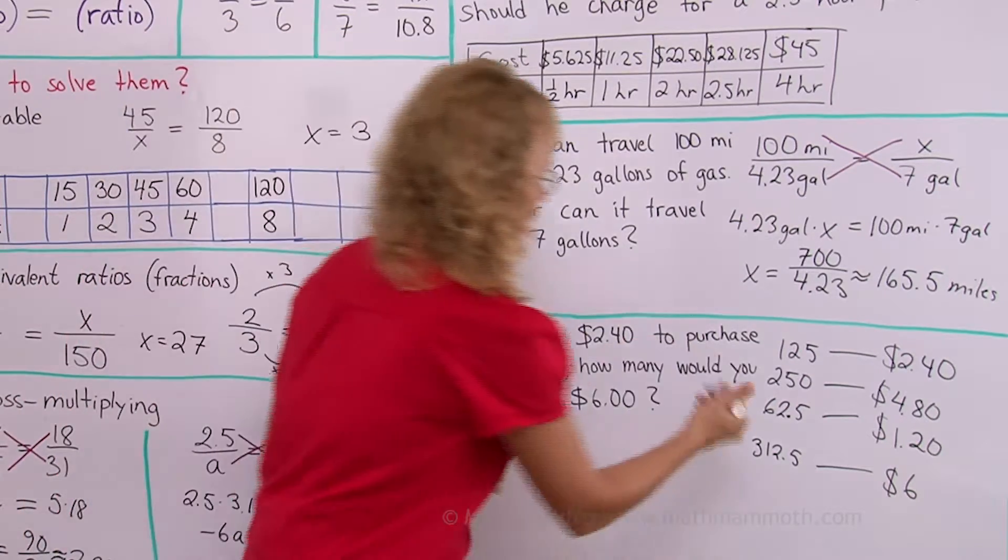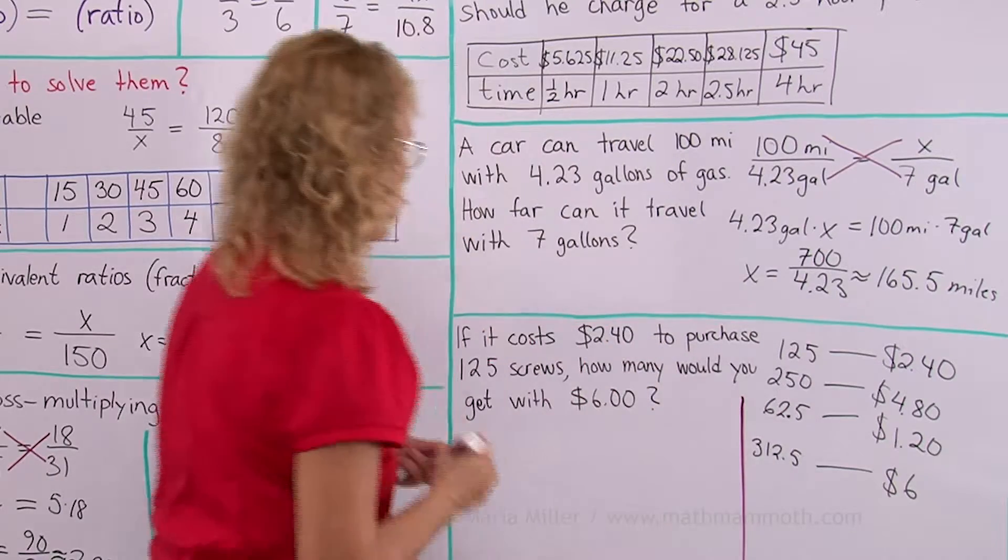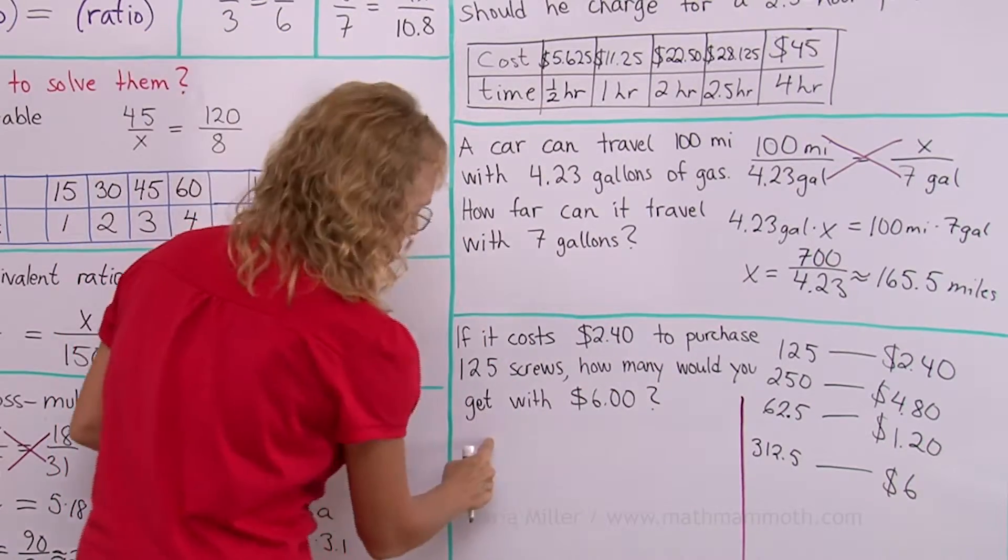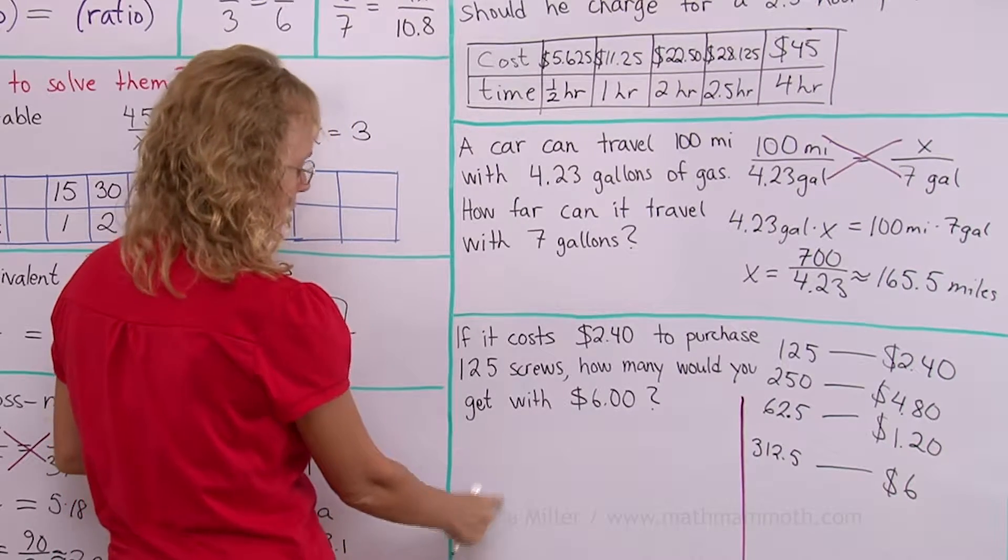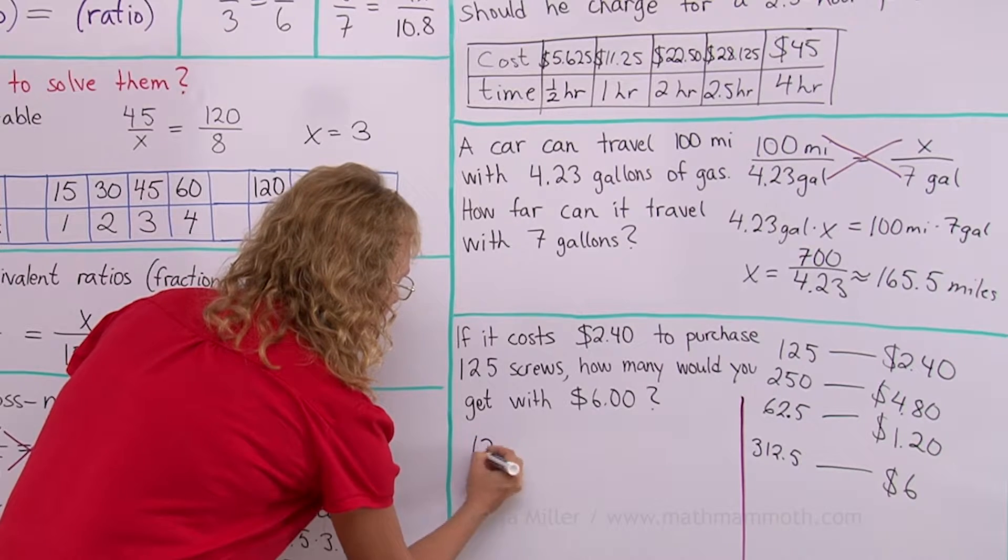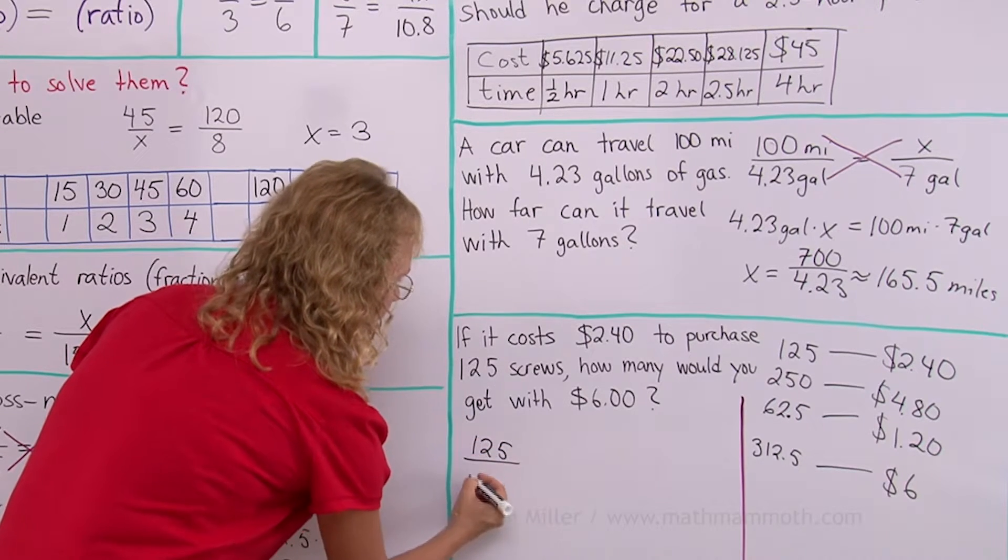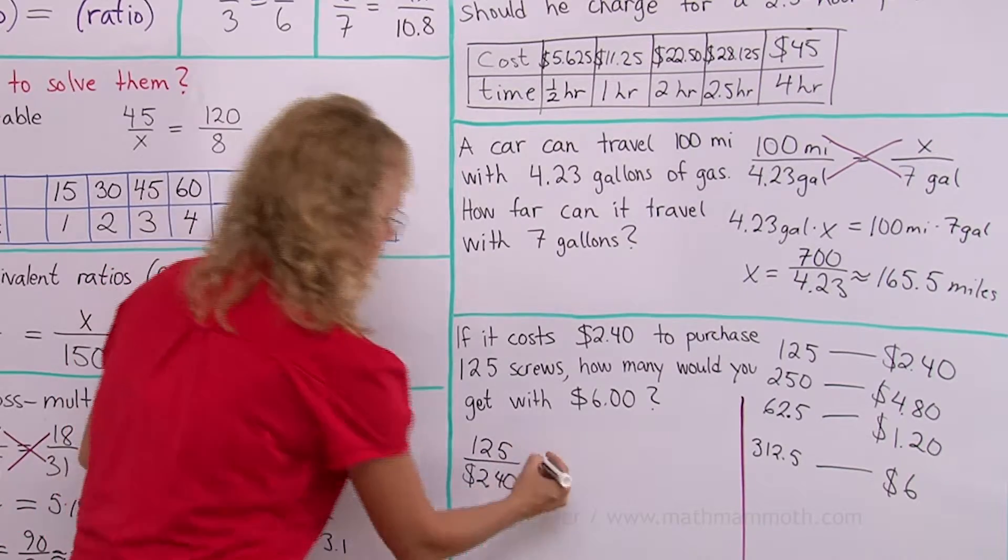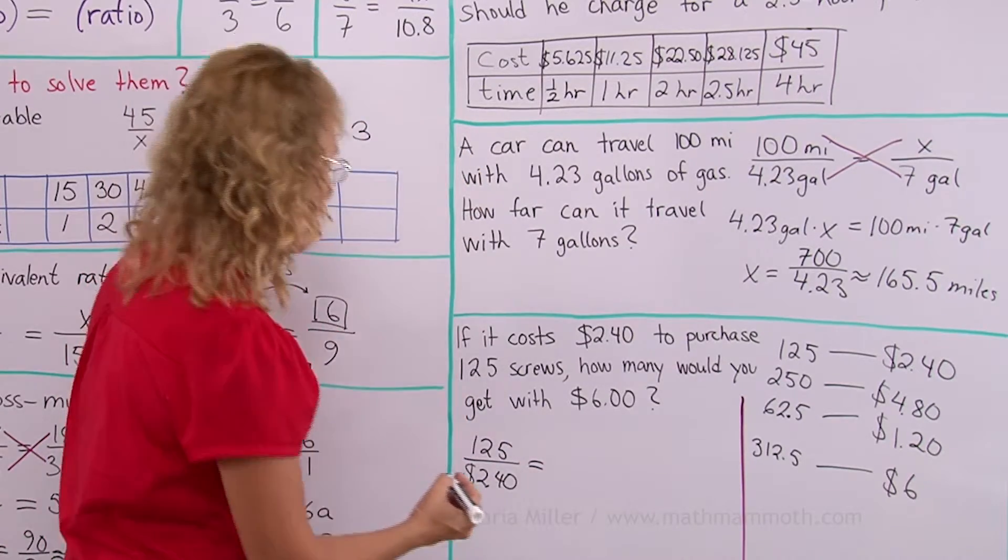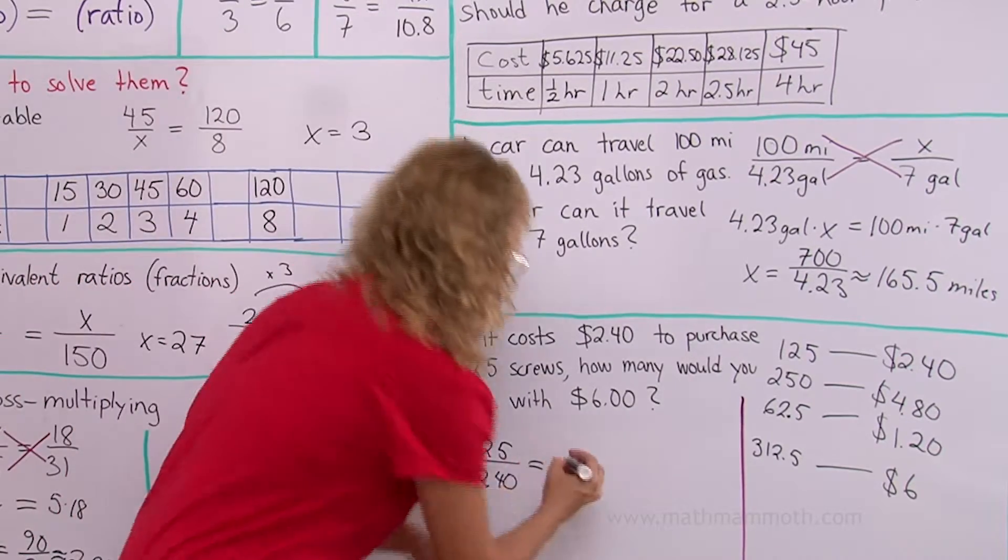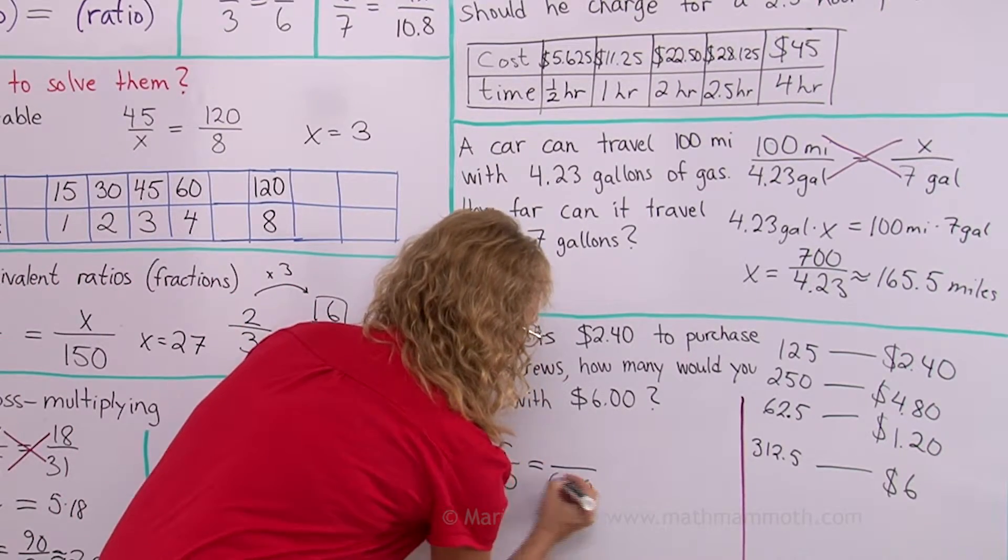And now also I'm gonna write a proportion. If I write a proportion I can put either screws per dollars or dollars per screws. Either way it'll work. Of course it's normal to put screws per dollars right? It's more usual. But it won't matter which way you do it. And then over here you just have to put since the money amount is on the bottom put the money amount here on the bottom too on this side.